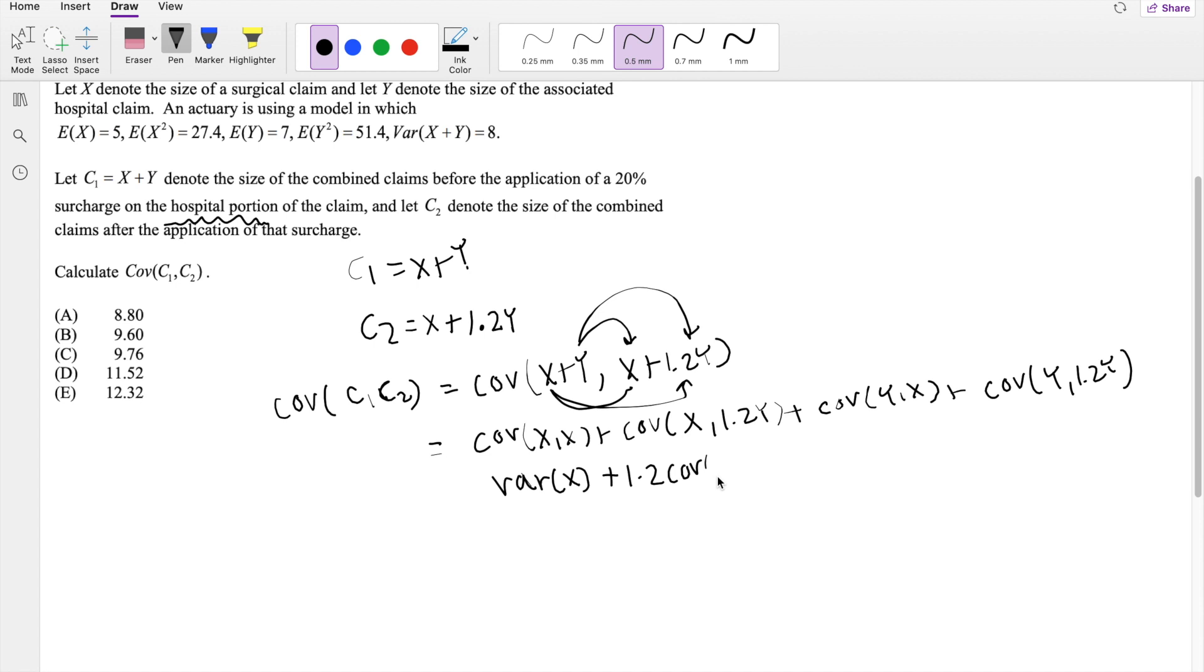So it's going to be 1.2 covariance of X and Y plus covariance of Y and X. And right here, we can factor out the 1.2. And again, same thing, covariance of Y comma Y is just going to be the variance of Y. So this is what we get.